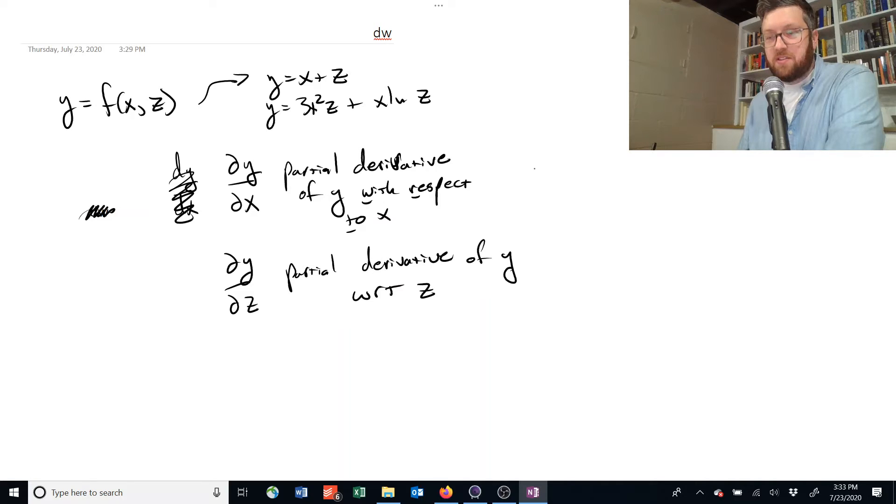You can't just do f' anymore, because what does that prime mean? Does it mean with respect to x or z? So instead we actually just write a little x or z down below. I could also write f_z(x,z). These mean the same thing.